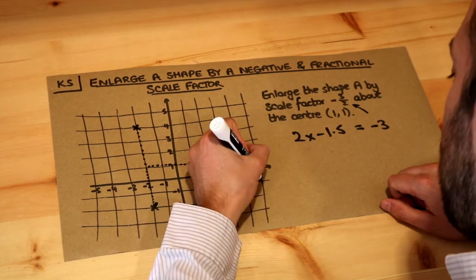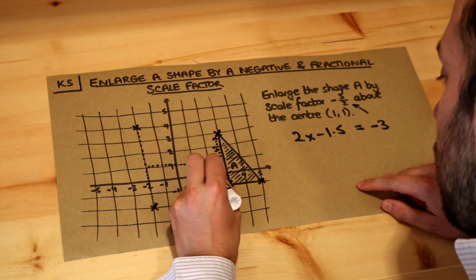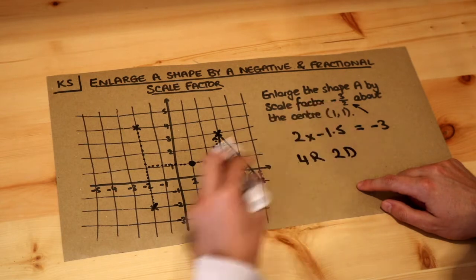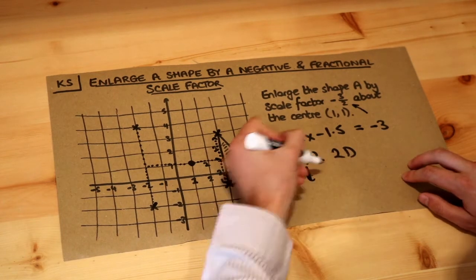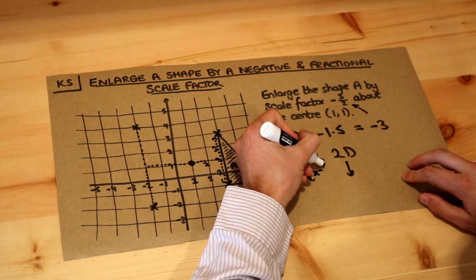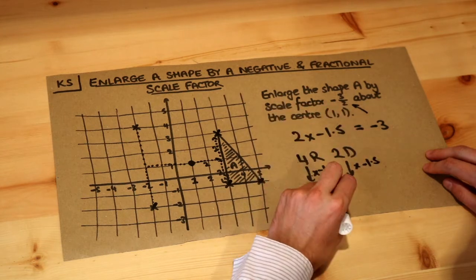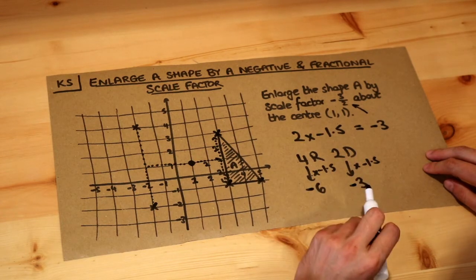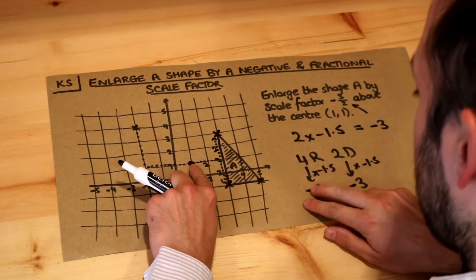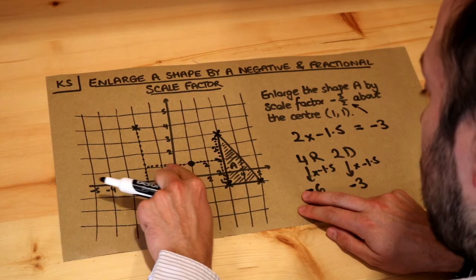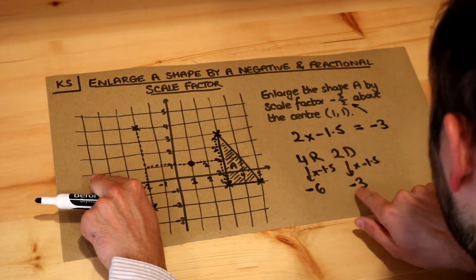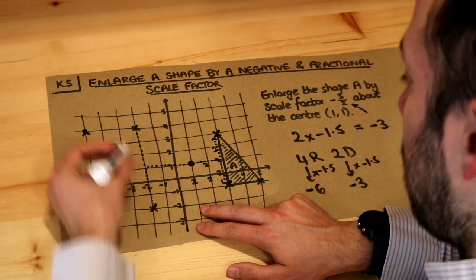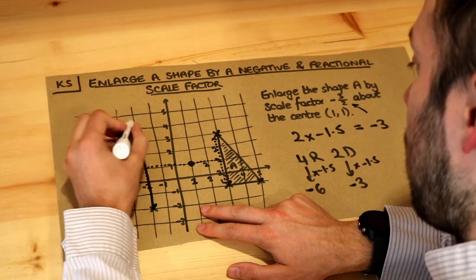For the final point, from the centre of enlargement we have four right and two down. Multiplying each by minus 1.5: four times minus 1.5 is minus six, and two times minus 1.5 is minus three. So four right becomes six left — one, two, three, four, five, six — and two down becomes three up — one, two, three. We get this point here, and joining up all our new points we get this shape.